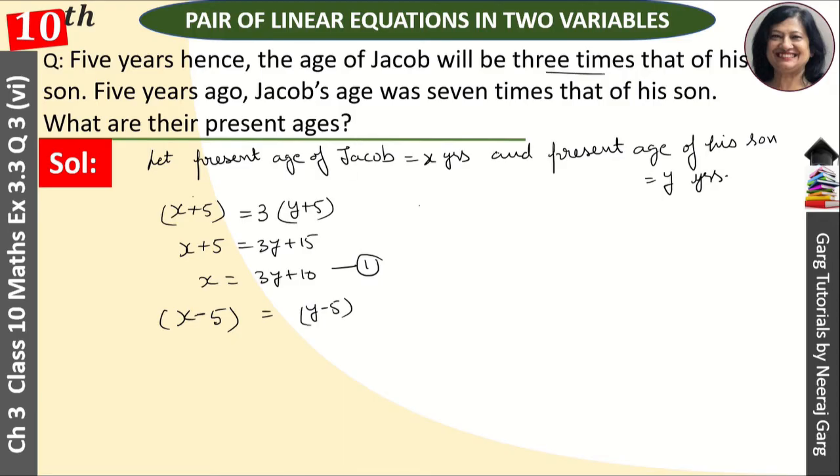And it says that his age was seven times. So here we'll multiply seven. We have to solve this. So this becomes x minus 5 is equal to 7y minus 35, okay? And x is equal to 7y minus 30. This is our second equation, okay?